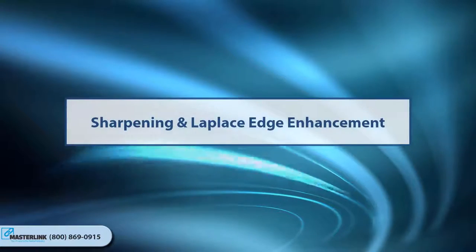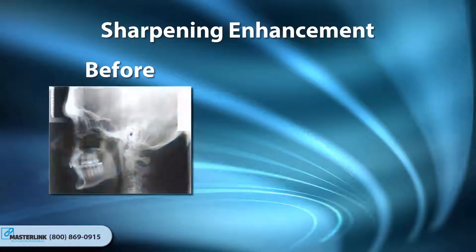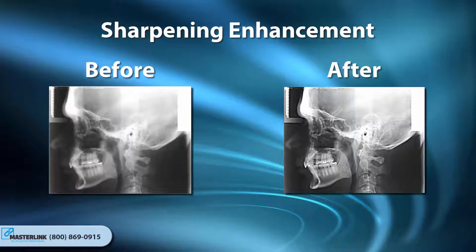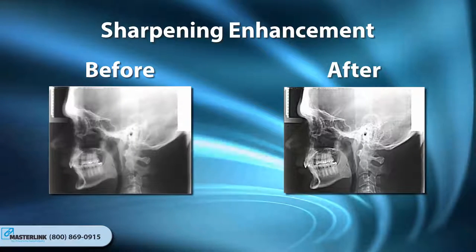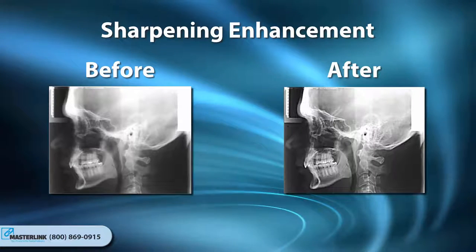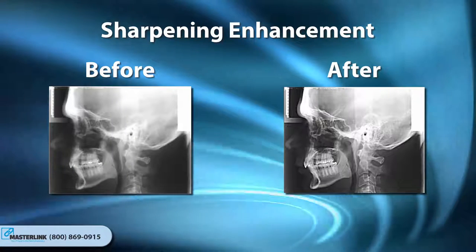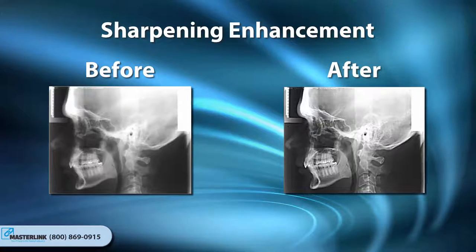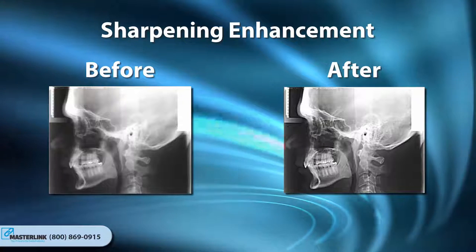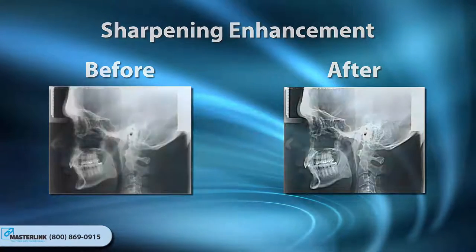Sharpening and Laplace Edge Enhancement. Due to the fact that most images have some degree of blurriness from focus problems or inherent limitations in the image-taking process, the imaging application offers two forms of image sharpening: mask sharpening and Laplace Edge Enhancement. Apteryx recommends the Laplace Edge Enhancement algorithm as the preferred method to sharpen an image. This method applies an Unsharp Mask image processing filter. Both approaches can compensate for blurriness in an image.